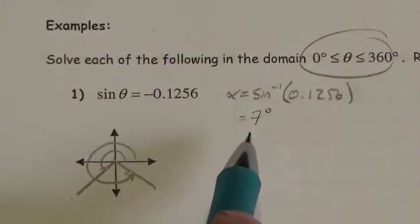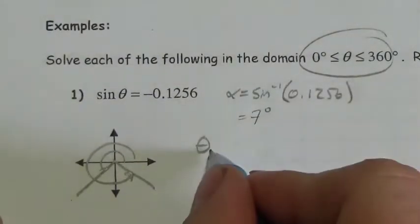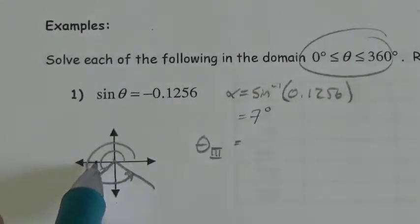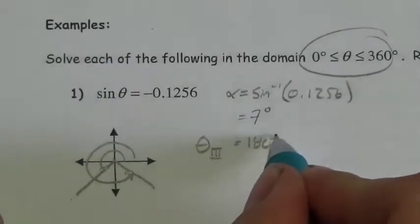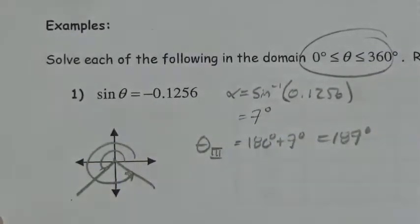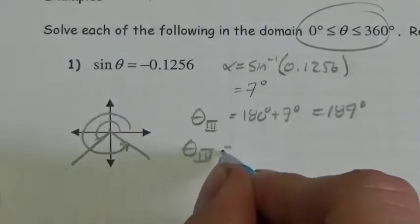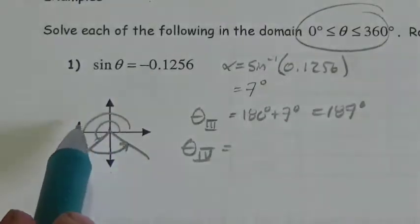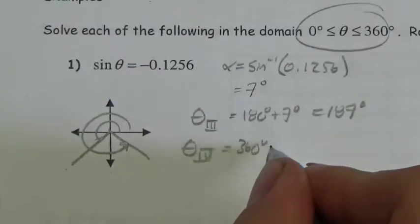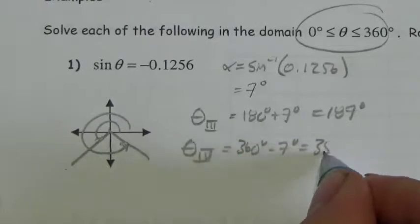That just tells me the angle inside the triangle. Now I have to figure out my third quadrant angle. That's going to be 180 degrees plus the triangle angle — so 180 degrees plus 7 degrees — giving one possible answer of 187 degrees. Then in quadrant 4, that would be 360 degrees minus the reference angle: 360 degrees minus 7 degrees, which is 353 degrees.